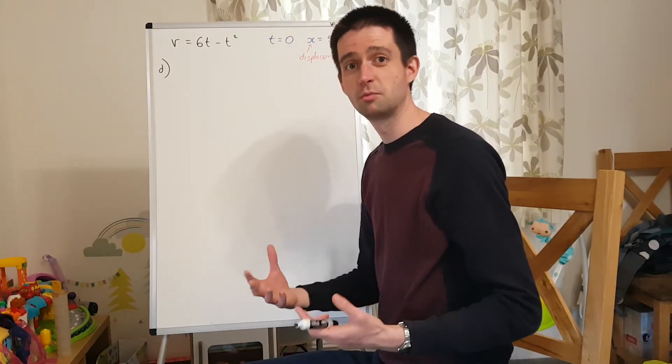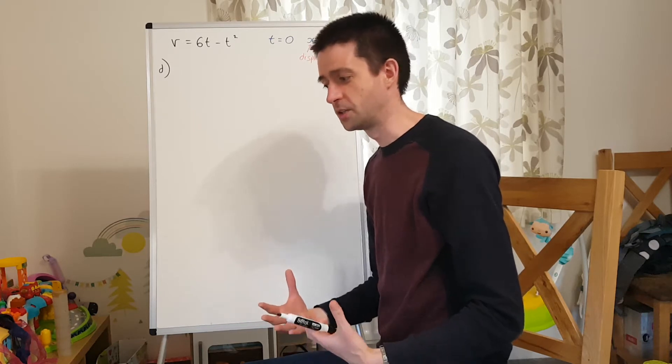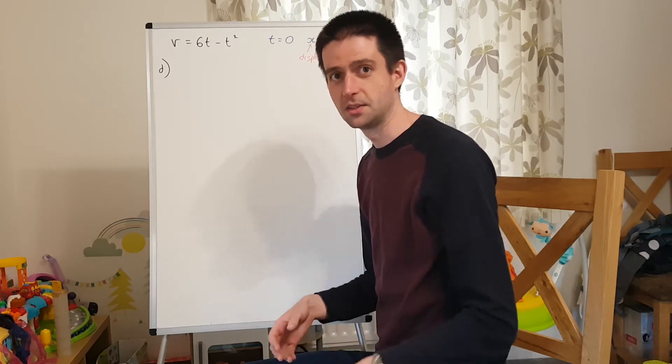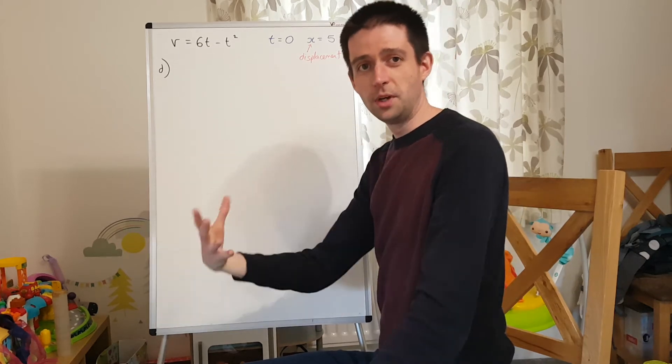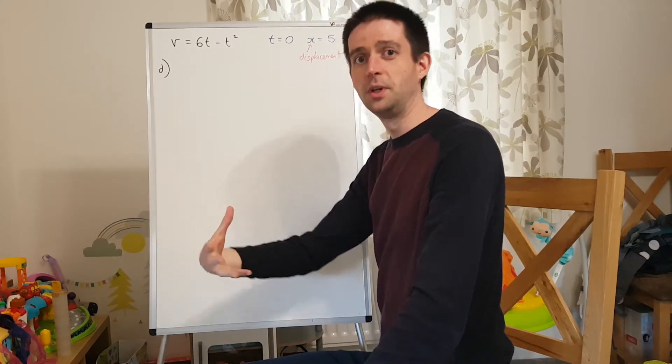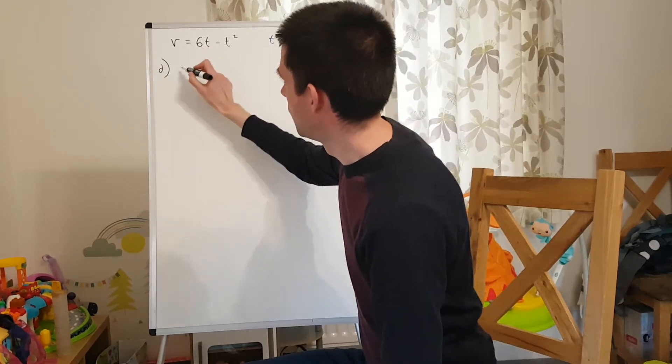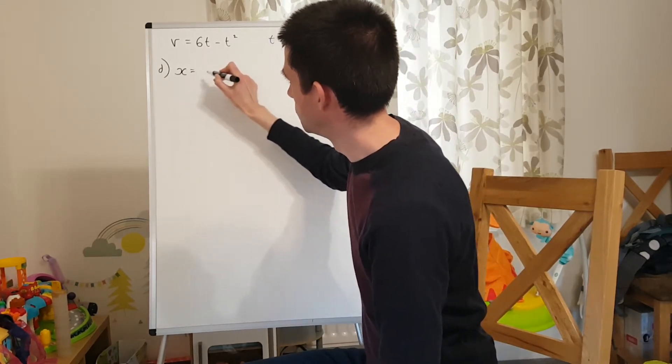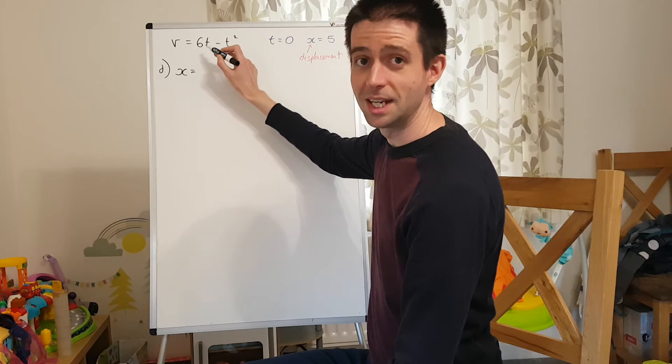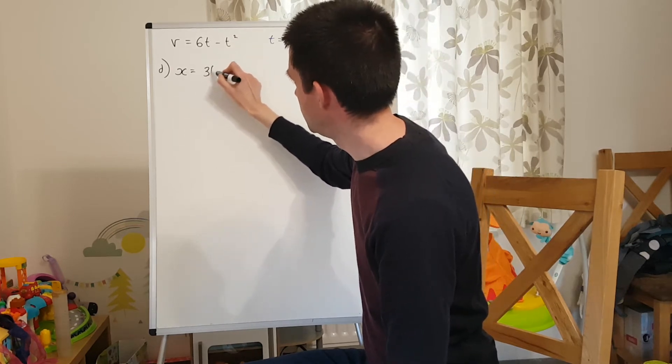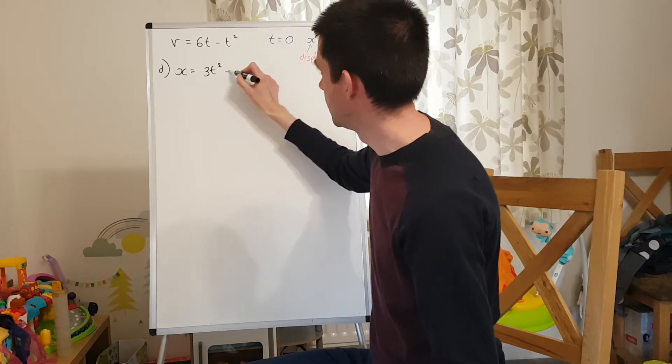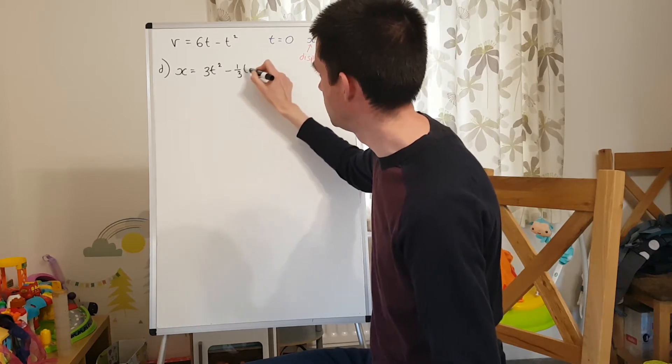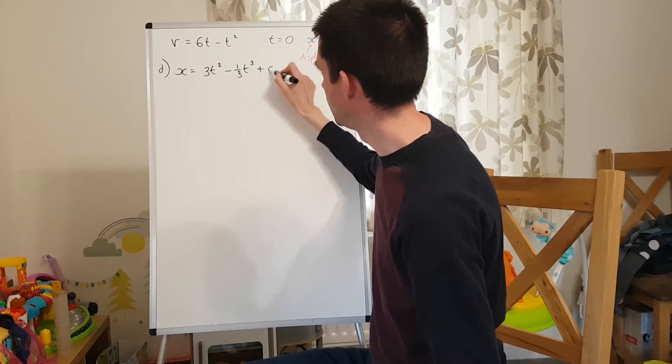Part D is asking us for an expression for the displacement of the particle at time t seconds. We have an expression for velocity. If we know velocity, to get displacement, we need to integrate that expression. Displacement, I'm going to call x. Integrate 6t, you get 3t squared. And integrate negative t squared, you're going to get negative 1 third t cubed. You mustn't forget the plus c.